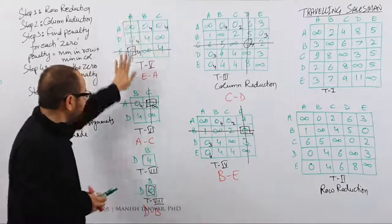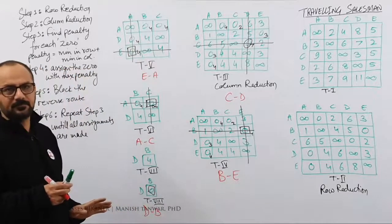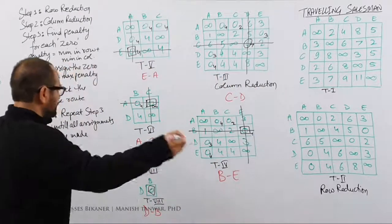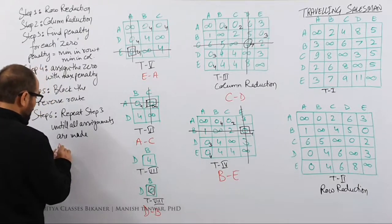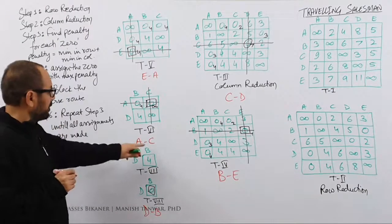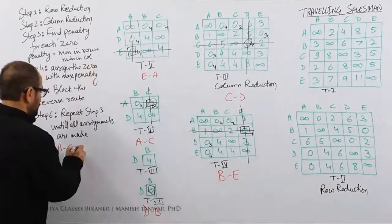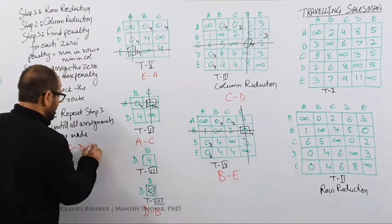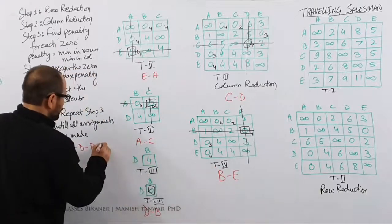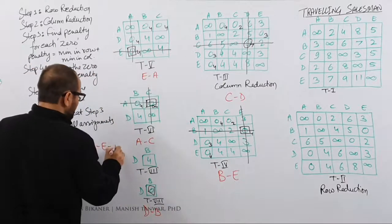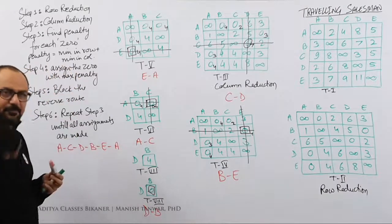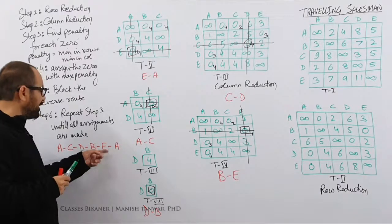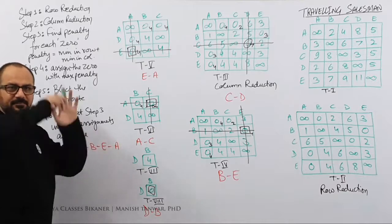I have now solved the complete Travelling Salesman Problem. The route suggested to the salesman is: from A he should go to C, from C to D, from D to B, from B to E, and from E back to A. This completes the loop. The route is A → C → D → B → E → A.